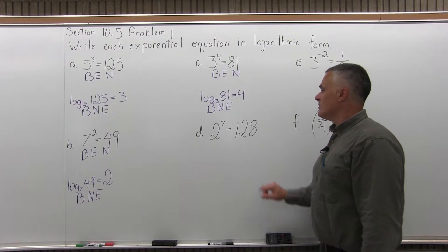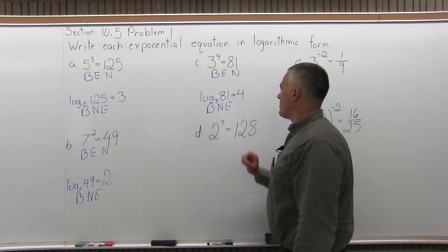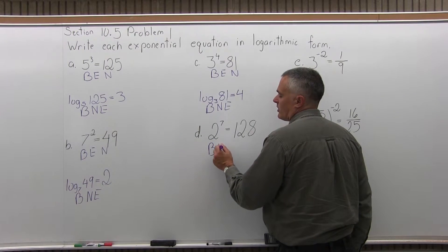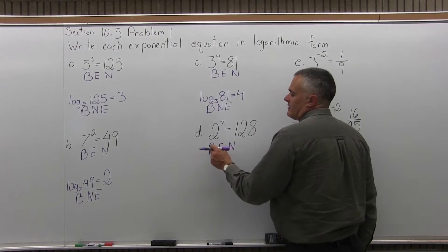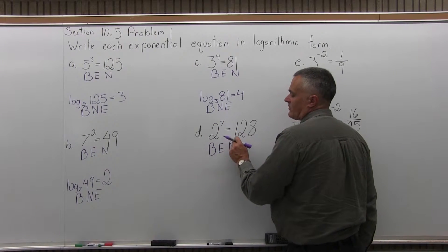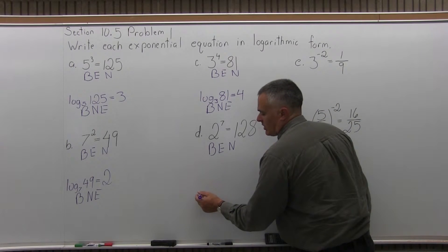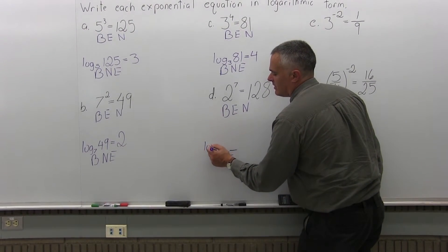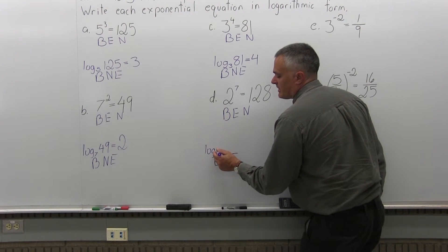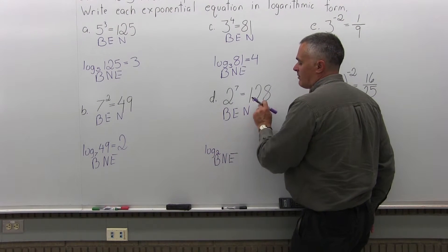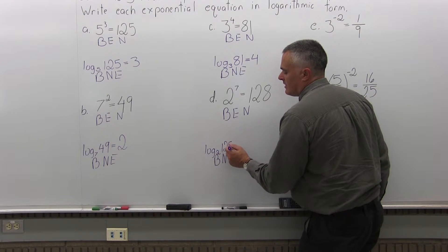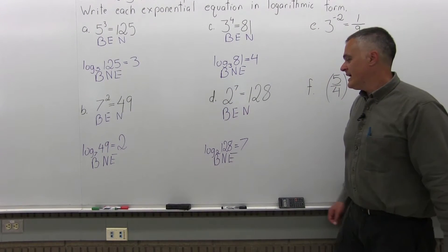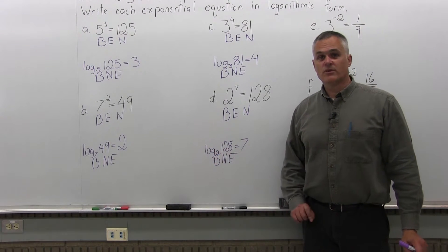Part D: write the equation 2 to the seventh power equals 128 in its log form. Under 2 to the seventh equals 128, I write BEN — base is 2, exponent is 7, number is 128. Down below I write BNE: log base 2, then the number 128, then equals, and then the exponent 7. So 2 to the seventh power equals 128 is the same as writing log base 2 of 128 equals 7.